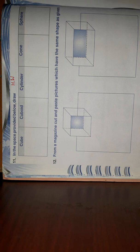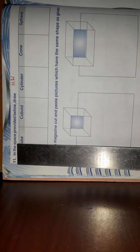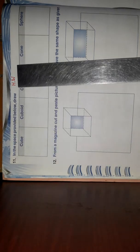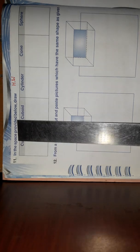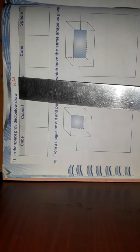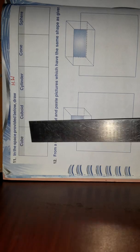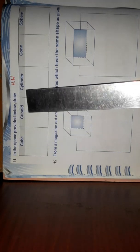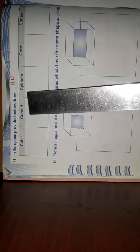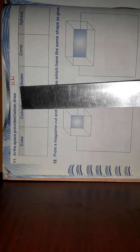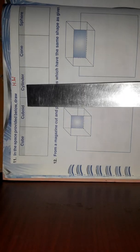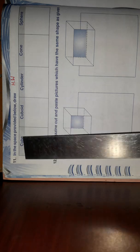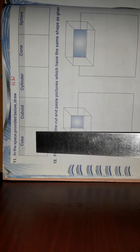देखें, Question number 11 homework है आपका। In the space provided below, draw. Space means जगह — ये जो नीचे जगह दी गई है, provided दी गई है नीचे के साइड में, उसमें आपको draw करना है, बनाना है। क्या बनाना है? Cube — cube का shape बनाना है।